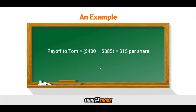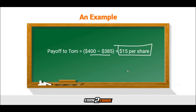Let's say we have Tom, who expects the price of Apple shares to increase, and his buddy Harris, who believes the price is going to drop. Both can enter into a forward contract with an exercise price of $385, and decide upon the number of shares themselves. If at maturity the price rises to $400, the payoff to the long position — Tom — would be $400 minus $385, winning $15 per share. Harris, on the short side, would be losing $15 and would have to pay Tom the agreed amount on the agreed date.